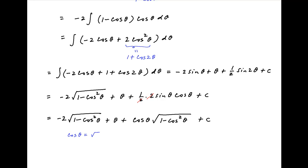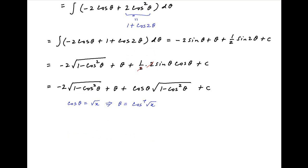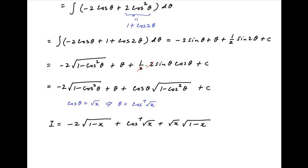Recall that cos theta is equal to square root of x, which implies that theta is equal to cos inverse of square root of x. Substituting this in the expression for I, we get the value of the given integral is equal to minus 2 times square root of 1 minus x plus cos inverse square root of x plus square root of x times square root of 1 minus x plus the constant of integration, which is the required answer.